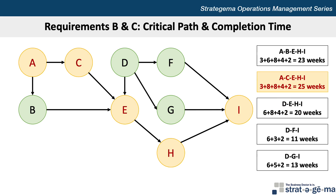Thus, we have 5 paths through the network, with times ranging from 11 weeks to 23 weeks. The critical path is the path that takes the longest, and that is A-C-E-H-I at 25 weeks, and that satisfies our requirements B and C. You can determine your sequence of paths any way you like, but you'll still end up with the same 5 paths through the network.